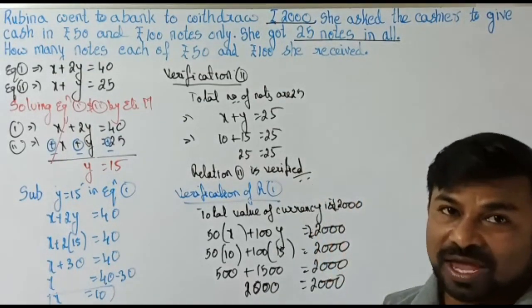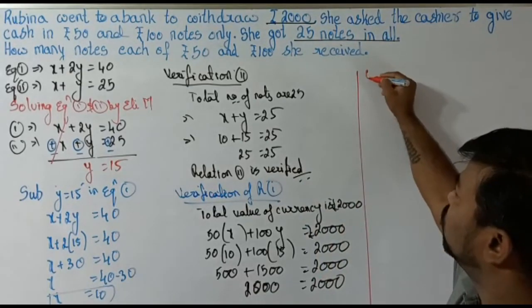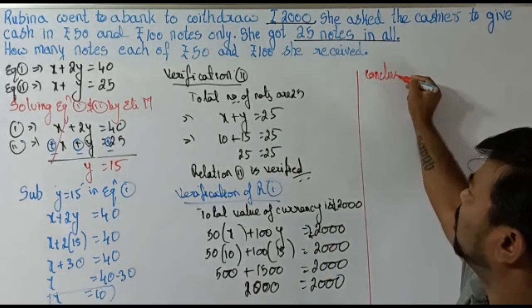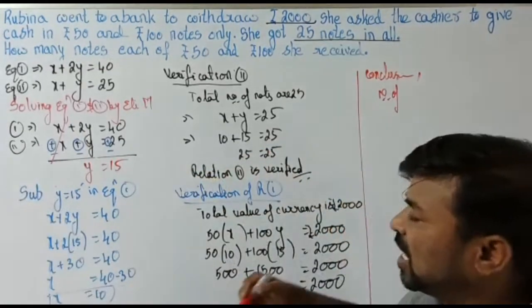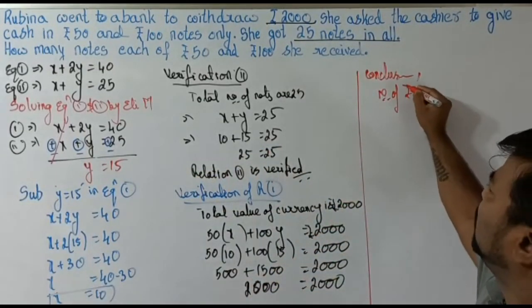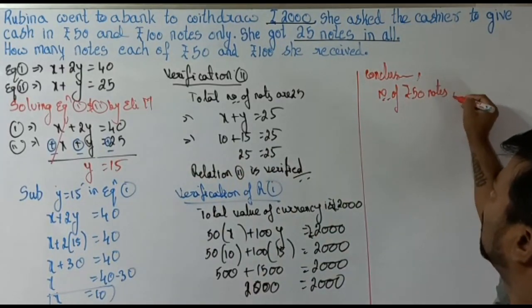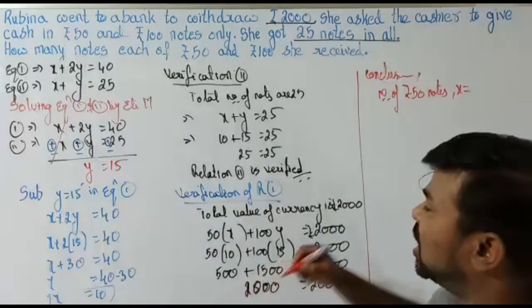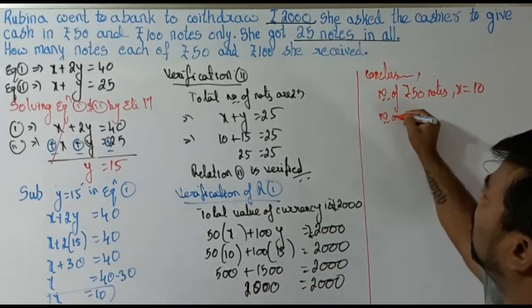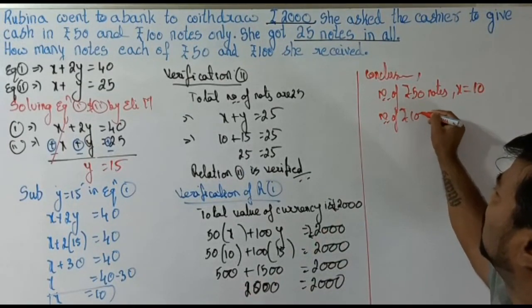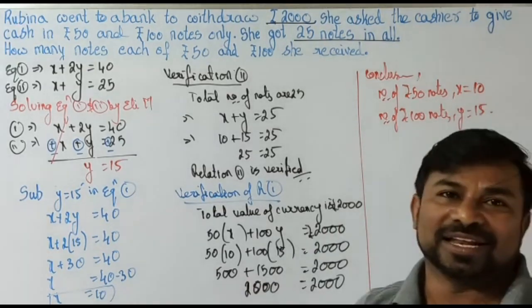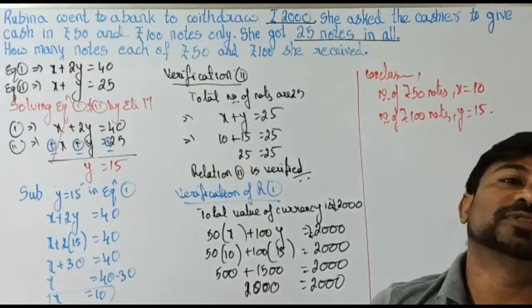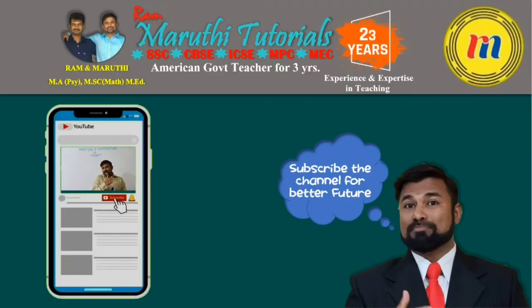Now let's write the conclusion. Number of 50 rupee notes: x = 10. Number of 100 rupee notes: y = 15. Hope you are able to understand. In this channel I have been placing both math and science videos.